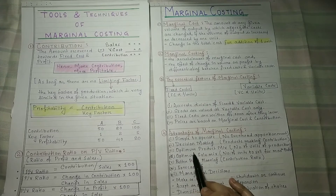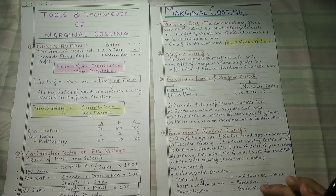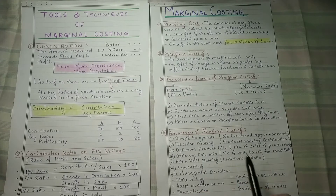The third advantage is optimum product mix. We can determine how many units of each product to keep in our product mix so that it is optimum and most profitable. This optimum sales mix — which products have more contribution and therefore more profitability — is determined using marginal costing.